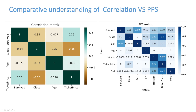In the PPS matrix, it's not the same. For example, class predicting ticket price is 0.9, whereas ticket price predicting class is 0.2 — they are not the same. We could find the ticket price based on class with almost 90% accuracy, whereas the vice versa does not hold — ticket price cannot find the class. That's how PPS gives us more insights and deeper interpretations of how features are correlated in any dataset.